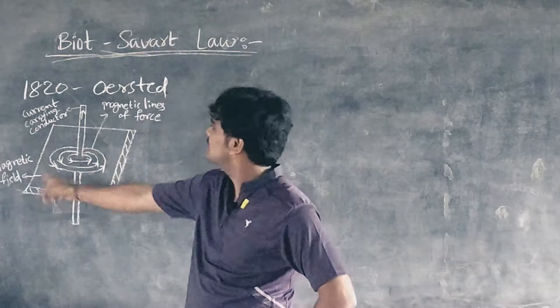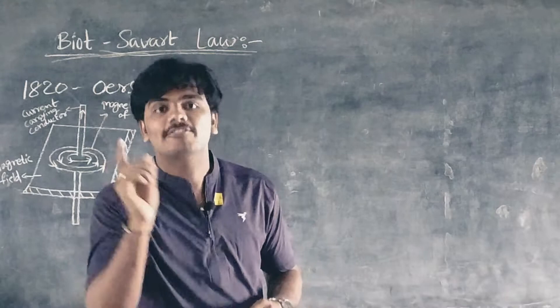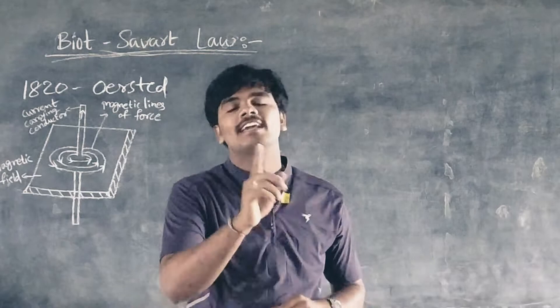Biot and Savart performed a series of experiments to study the magnetic field produced by various current-carrying conductors. They obtained a relation by means of which B can be calculated at any point of space around a conductor in which a current is passing. The relation is called Biot-Savart law.